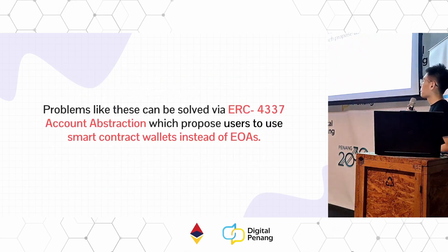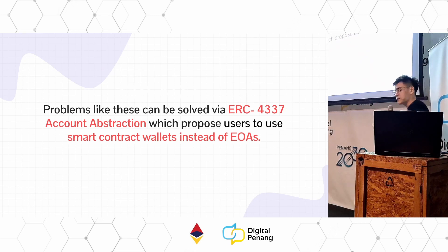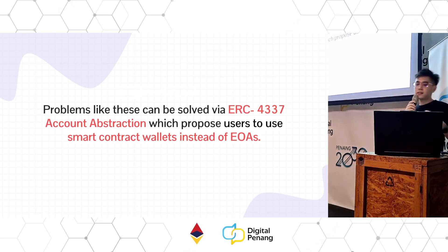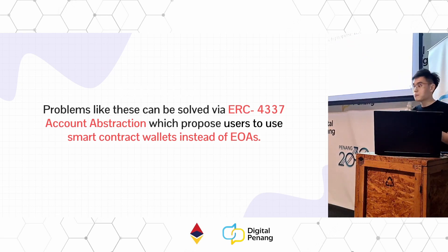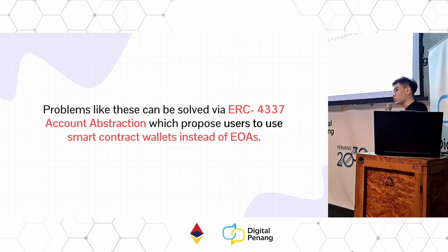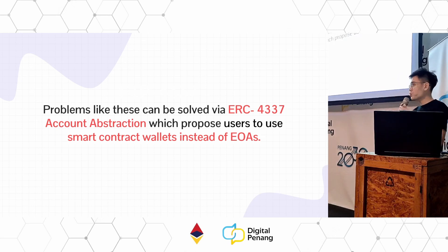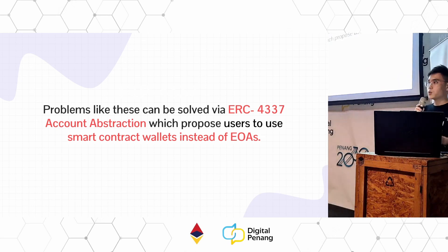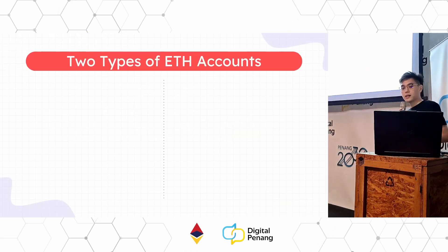People found these problems can be solved using account abstraction, which proposes that users use smart contract wallets instead of EOAs. There are two key terms here: smart contract wallets and EOAs. So what are smart contract wallets and EOAs?